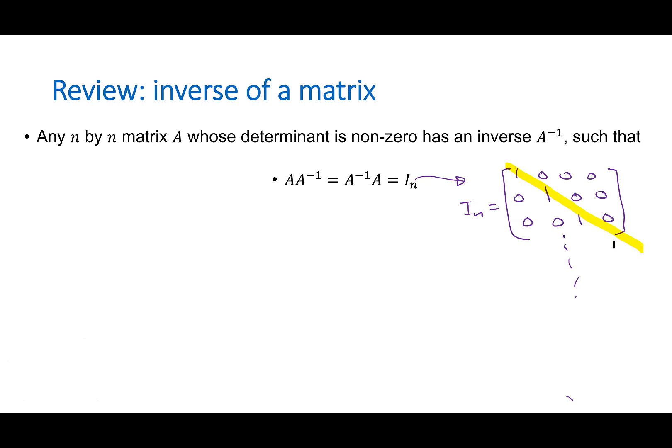So, we call this the identity matrix, and you can swap those. We call that the inverse of A. And the formula for that is 1 over determinant of A times adjoint of A.